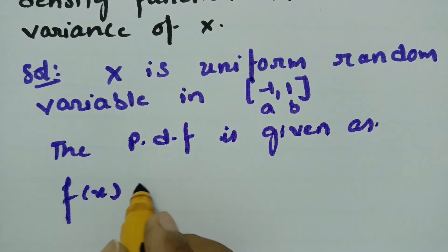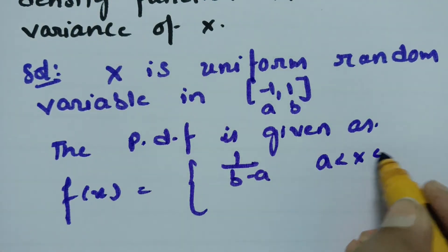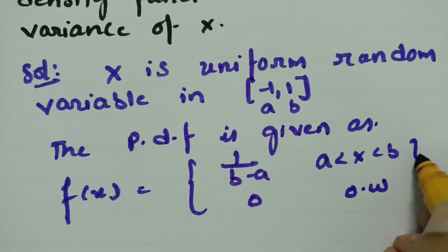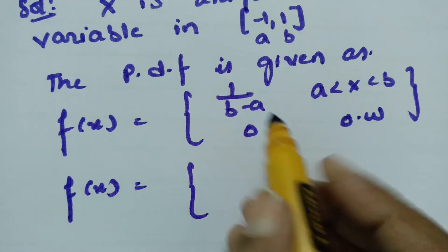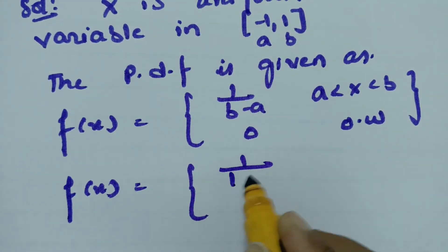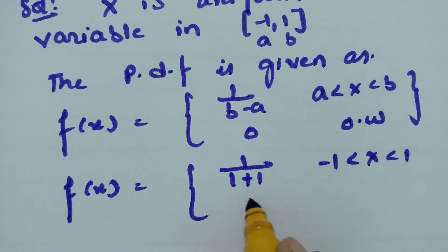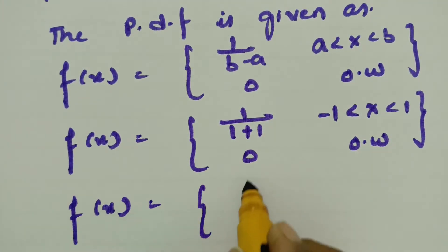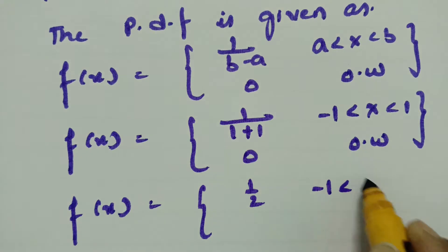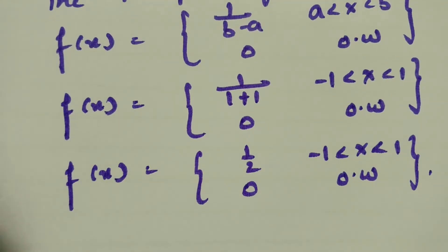f of x is equal to 1 by b minus a, where x lies between a and b, and 0 otherwise. Therefore our f of x value is equal to 1 by b minus a, where b is 1 minus of minus 1, giving minus 1 less than x less than plus 1 and 0 otherwise. So f of x is equal to 1 by 2, for minus 1 less than x less than 1, and 0 otherwise. This is the probability density function.